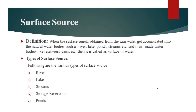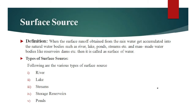We will see what is surface source of water. When the surface runoff obtained from rainwater accumulates into natural water bodies such as river, lake, ponds, streams, etc., and man-made water bodies like reservoir, dams, etc., then it is called as surface water. Surface means above the ground.